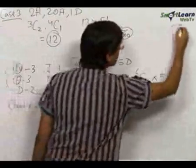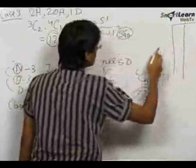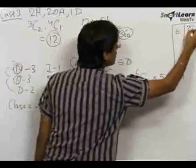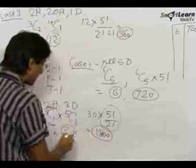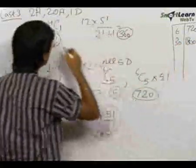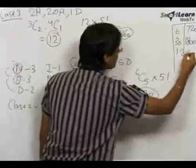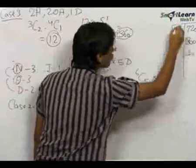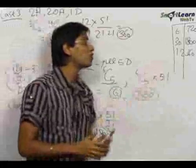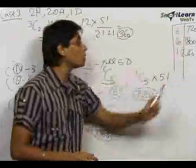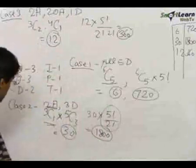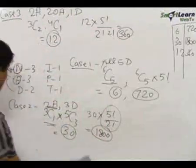Let's make a summary column. Case 1: 6 selections, 720 words. Case 2: 30 selections, 1800 words. Case 3: 12 selections, 360 words. The first column represents total selections of five letters, and the second column represents total words formed.